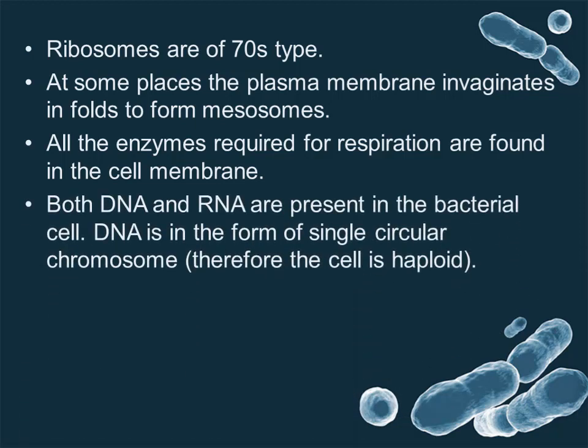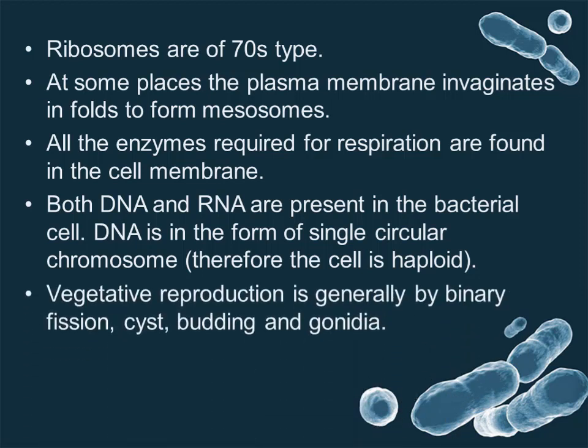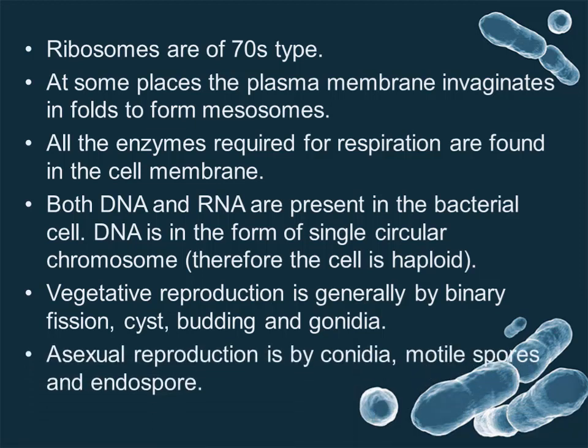Both DNA and RNA are present in the bacterial cell. DNA is in the form of a single circular chromosome; therefore, the cell is haploid. Vegetative reproduction is generally by binary fission, cyst formation, budding, and gonidia. Asexual reproduction is by gonidia.